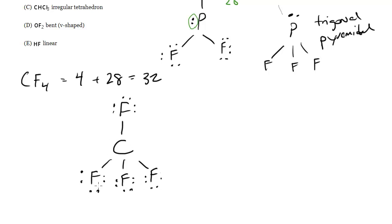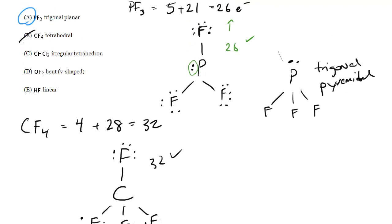Now let's count the electrons. Each F has 6, so 6, 12, 18, 24, plus 4 bonds, we got 2 electrons each. 24 plus 8 is 32. So this is the correct shape. Notice this is going to be tetrahedral, it's 4 bonds to a central atom, so choice B is correct.